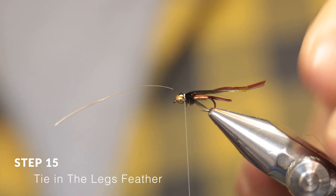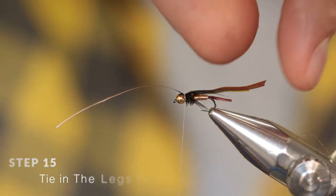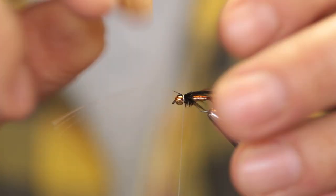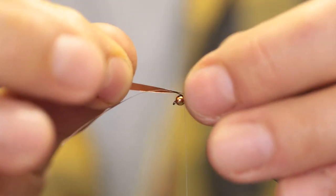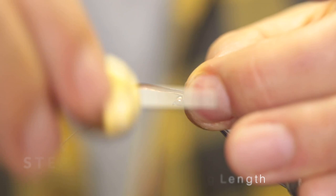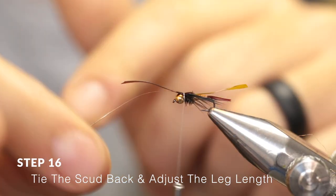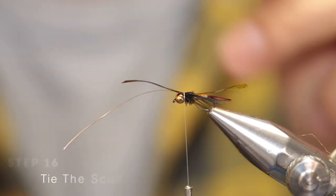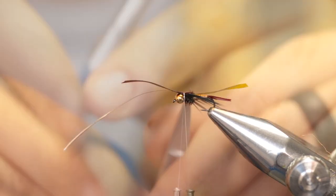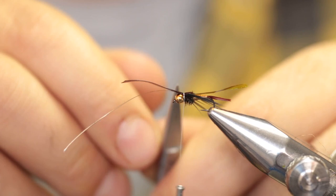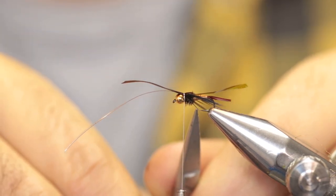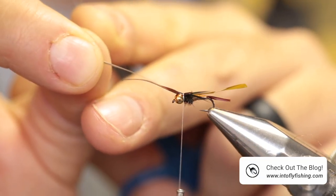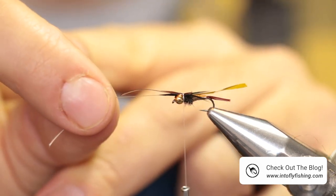Place it on top of the hook, fold it over, and pinch it. Make two loose wraps around it and pull it back slightly. Now take the scud back material—not the flashback, just the scud—and pull that over as well. You'll see that splays open the hackle fibers. Pinch it in place and make two loose wraps again. Pull back on the feather while keeping in mind that we're adjusting the length of the legs. We want the legs to be as long as where they're tied in to the point of the hook.